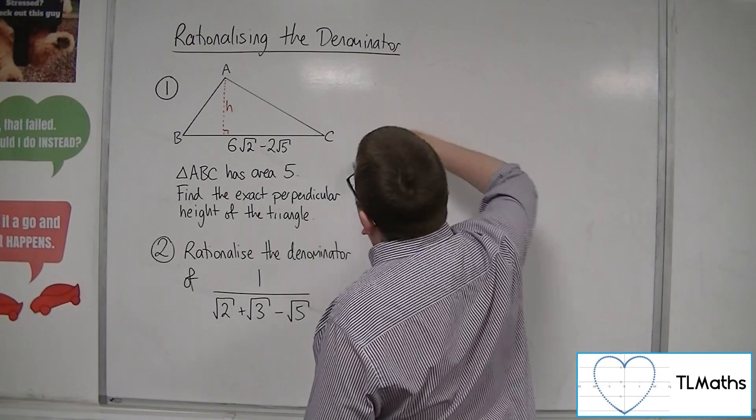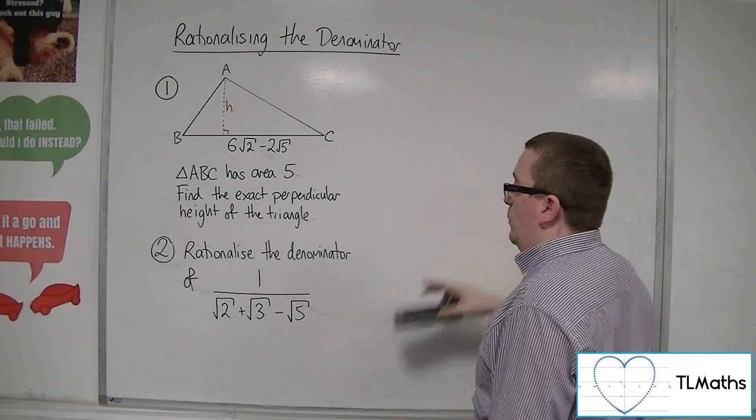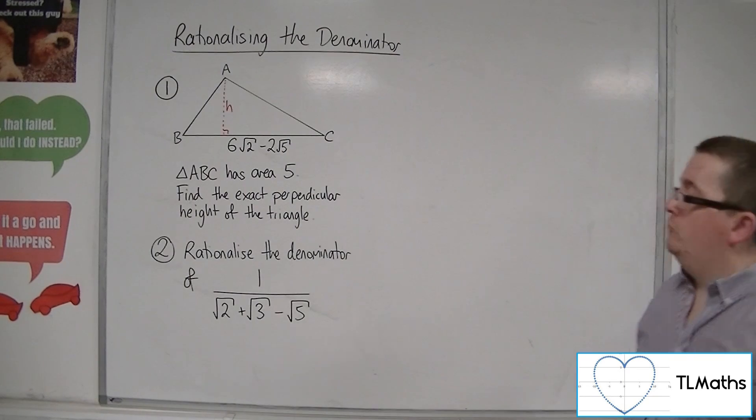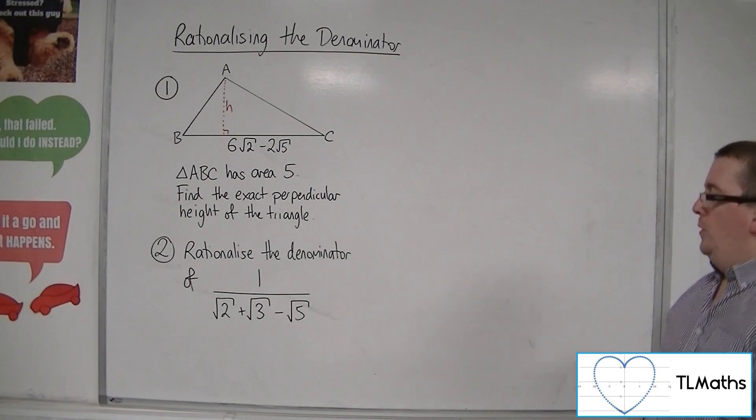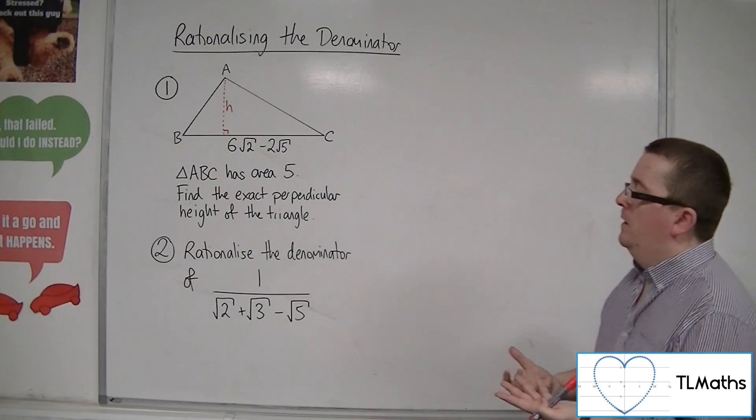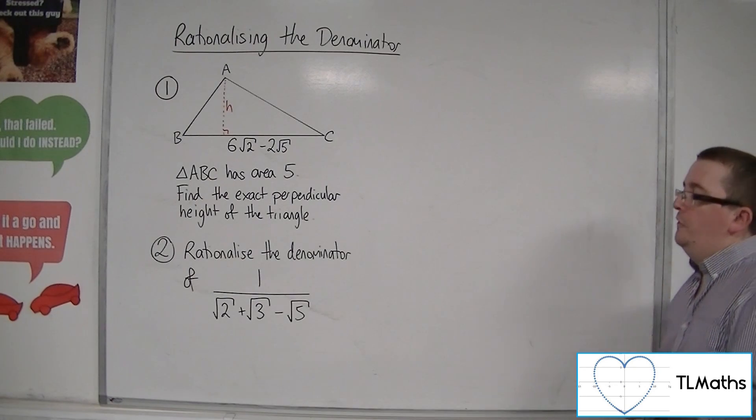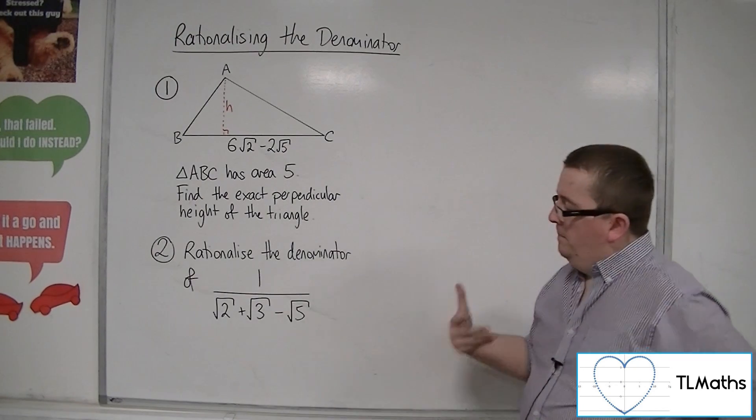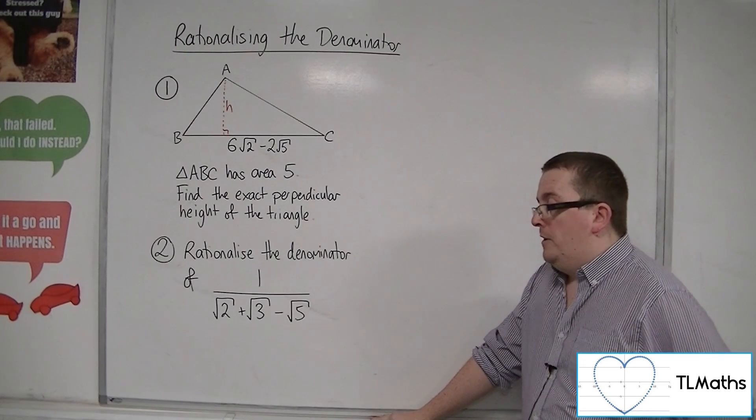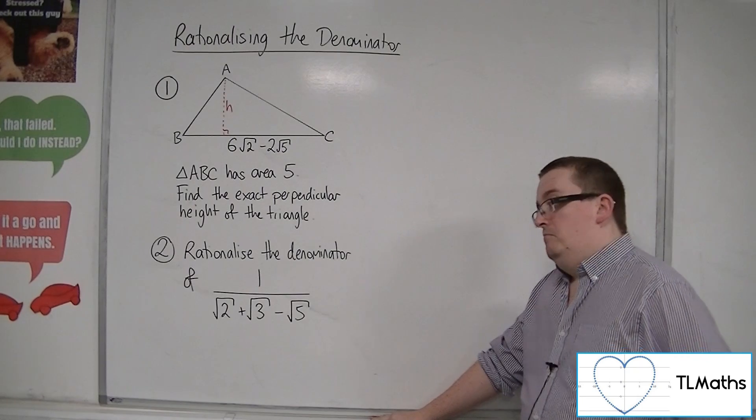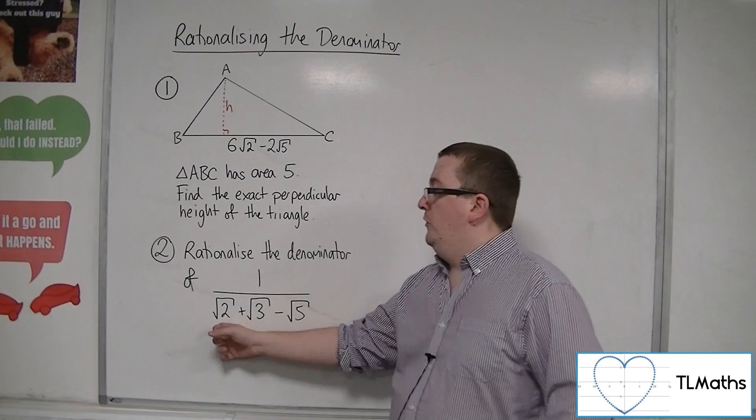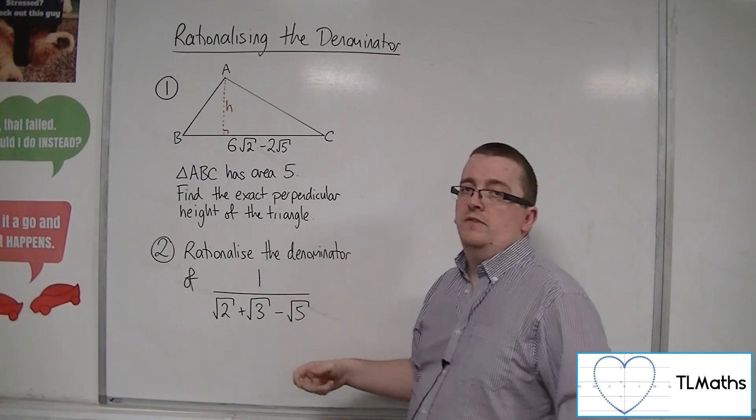Now, the second problem here, we've got 1 over root 2 plus root 3 minus root 5. Now, we want to find a way of simplifying this down to remove these surds from the denominator. Now, maybe our initial idea might be to multiply top and bottom in the same way that we've done before, and multiply top and bottom by maybe root 2 minus root 3 plus root 5.